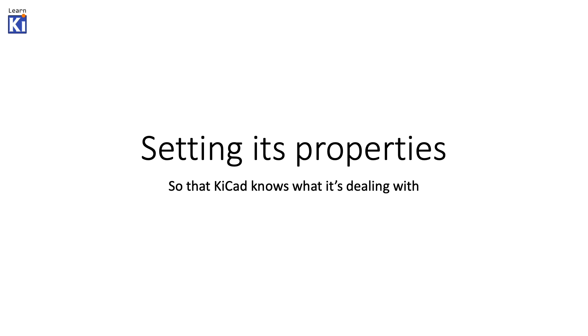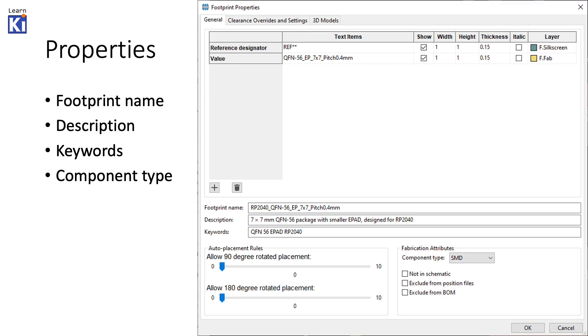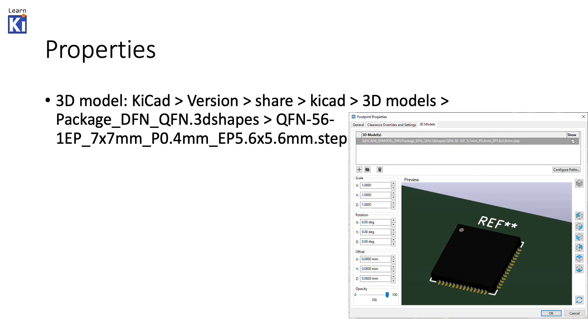And here's the 3D model. So you can check your paste margin and all the other properties. We're not done yet. That's why we get to set its properties now in the footprint editor itself. You choose the footprint name. I change this from the default to one that includes the actual chip's name because it's unique to it. And just some general description and keywords to make it easier to find. Important is that you set the correct component type. That's important for when you are looking at 3D models of the PCB and want to exclude or include certain things.